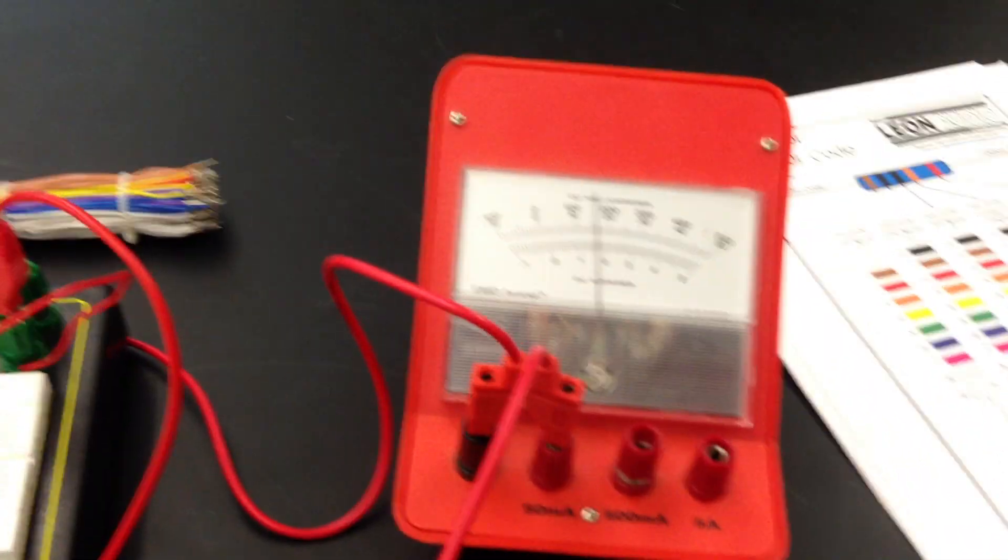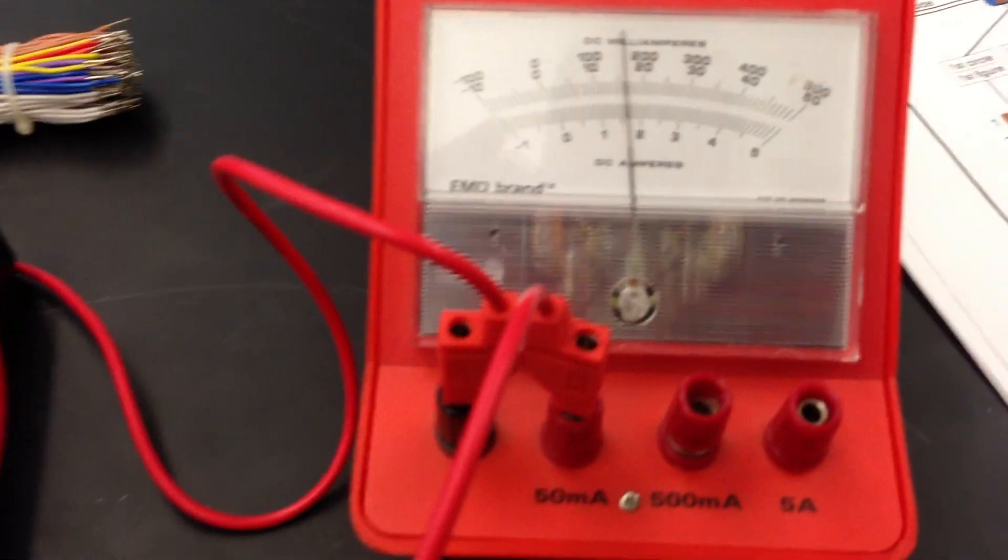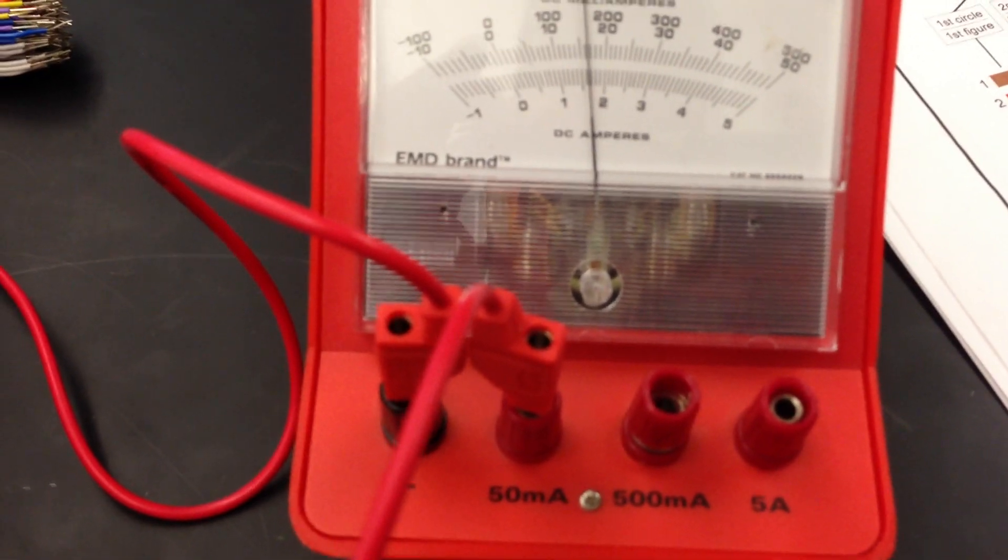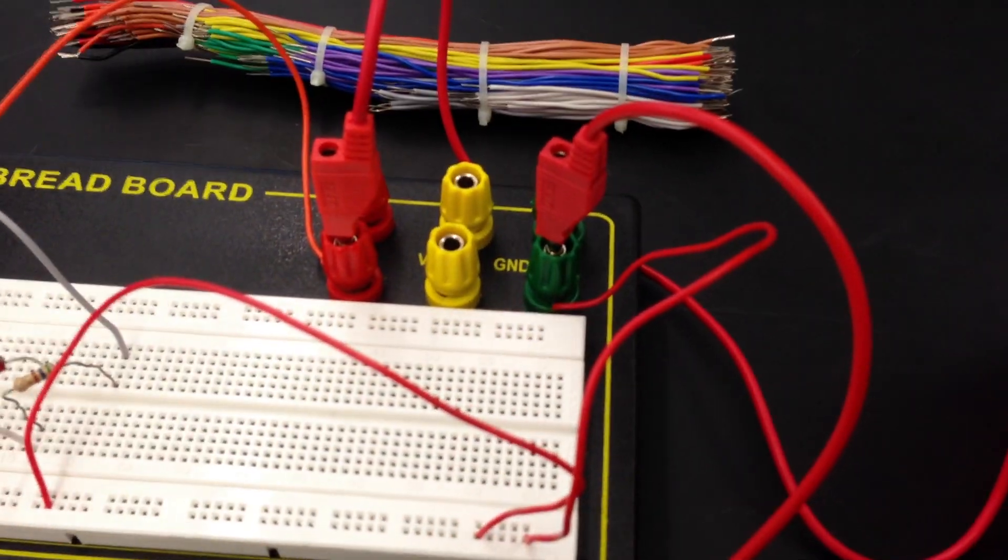If you follow the power line, it goes over to our ammeter, which is plugged into the 50 milliamps. And then it leaves that and goes over to our breadboard to the power supply,